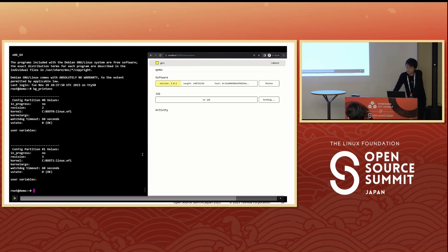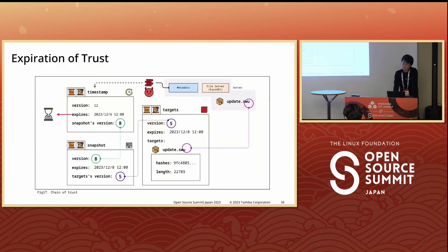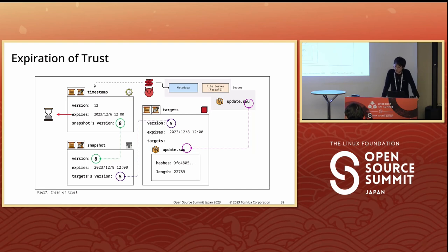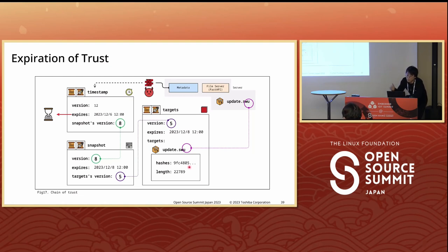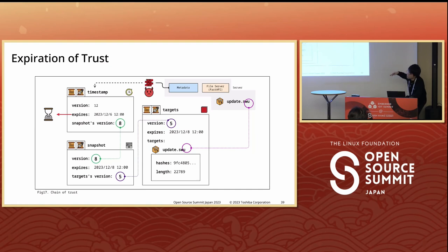This demonstration shows that the update flow just described can be easily implemented on existing systems. Now let's examine how security is enhanced. Against drop-request attack and freeze attacks: suppose updating of timestamps is hindered — the device can't update the timestamps. When the timestamp expiration is reached and the device attempts to update the timestamps but can't, we can detect the presence of attackers. A similar expiration applies to other roles, and version files are linked like a chain, allowing detection of attackers. Continuous metadata checks help clients detect attackers.